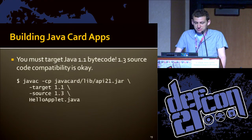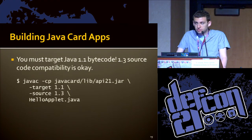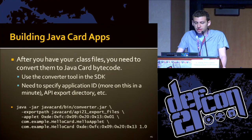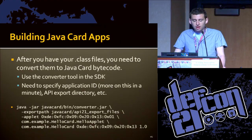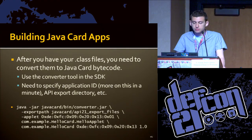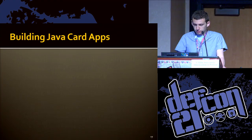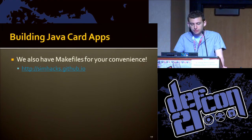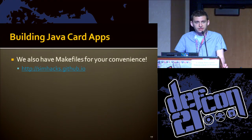To build Java Card apps, you target an older version of Java — 1.1 bytecode and 1.3 source compatibility. Once the standard Java compiler creates the class file, you convert it to something compatible with Java Card using a tool included in the SDK. You specify an application ID, since you can have multiple apps on a card. The output is a cap file — similar to a jar file, it's a zip of bytecode. We've created make files and scripts to make this all easier, so you can just type make and it'll go.